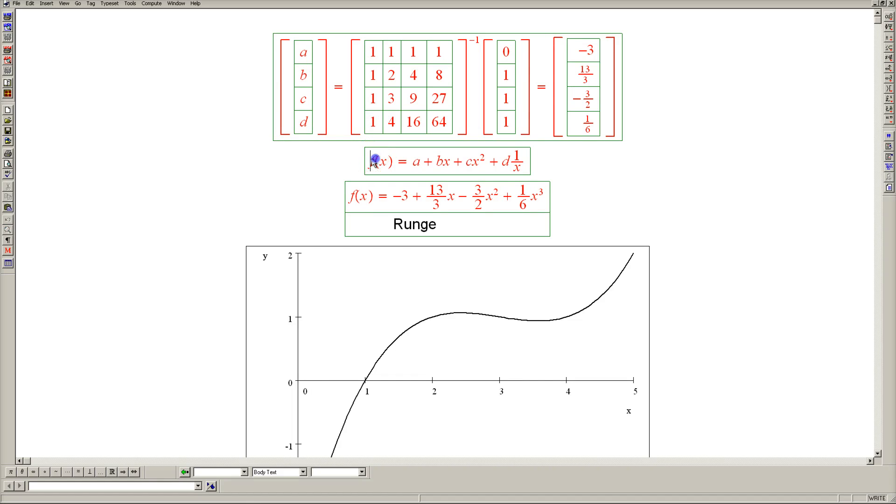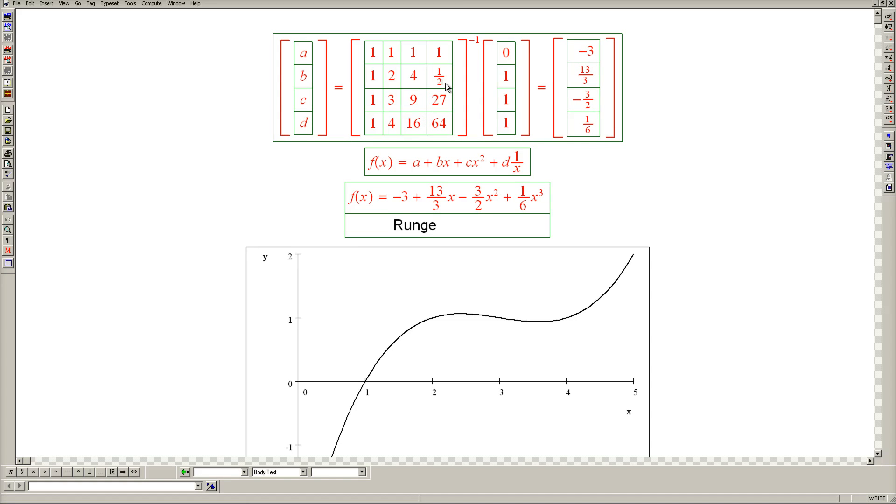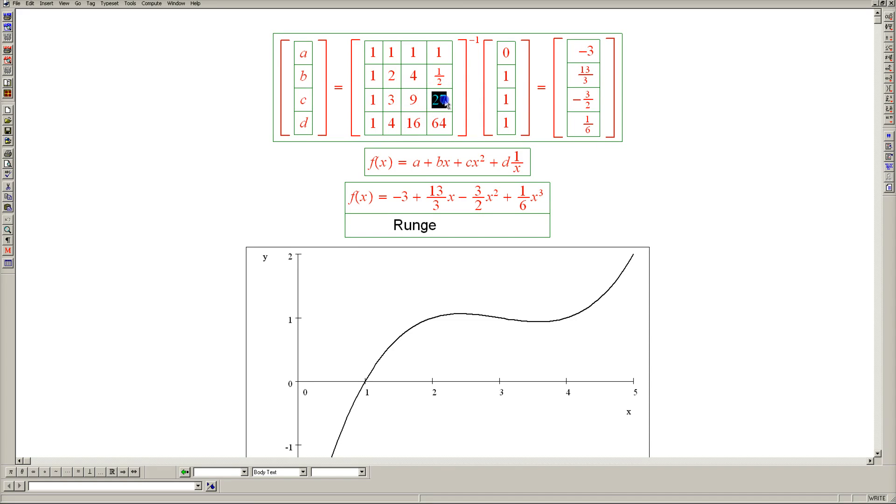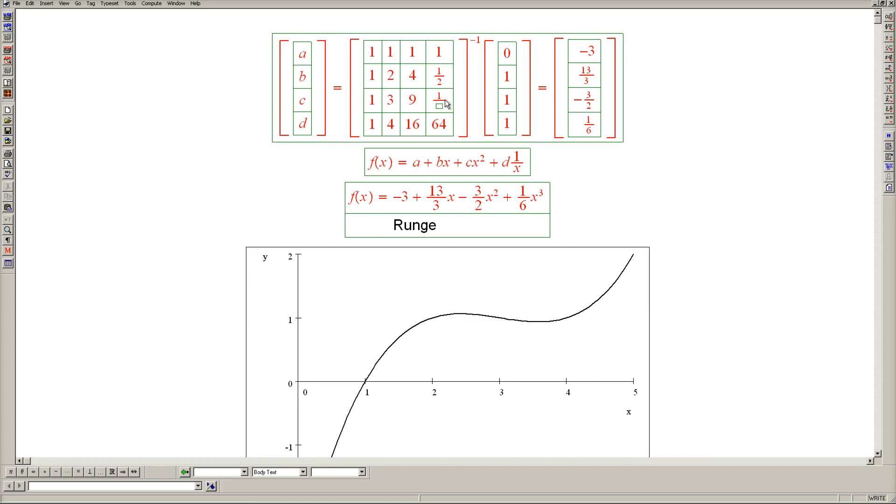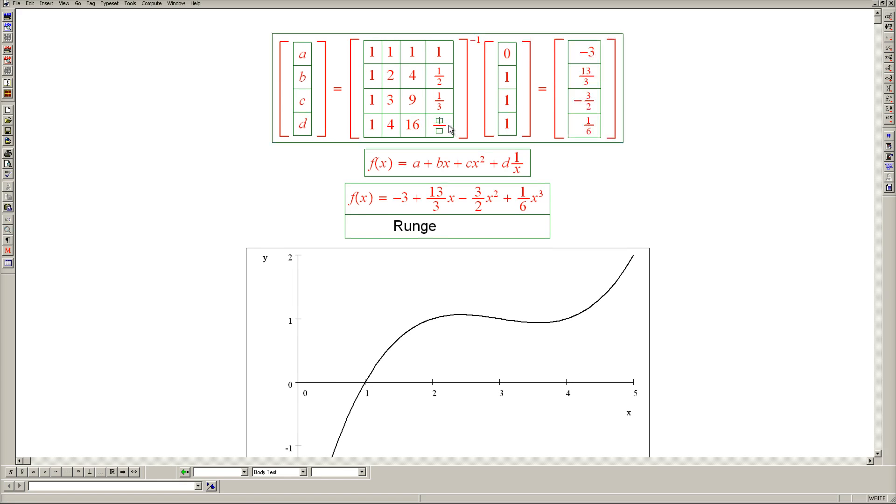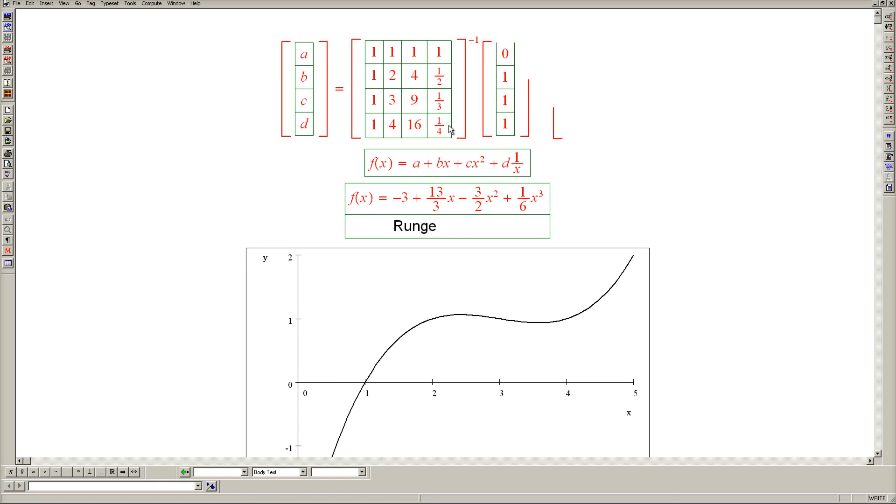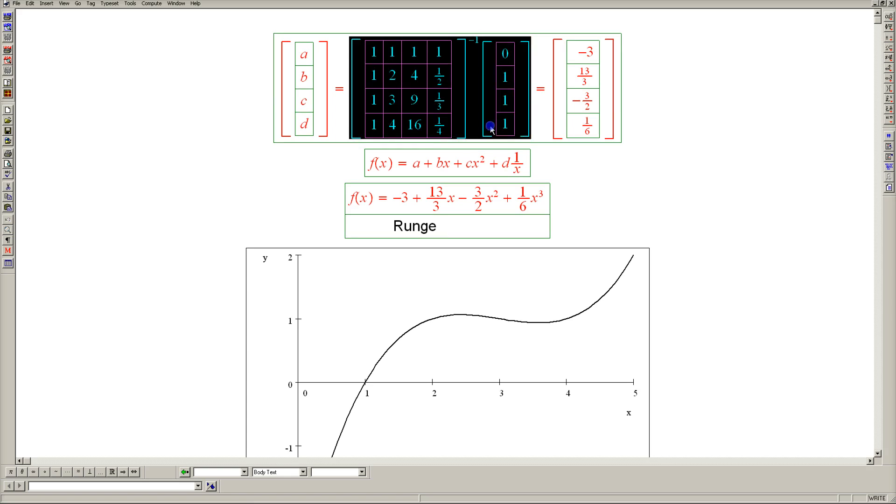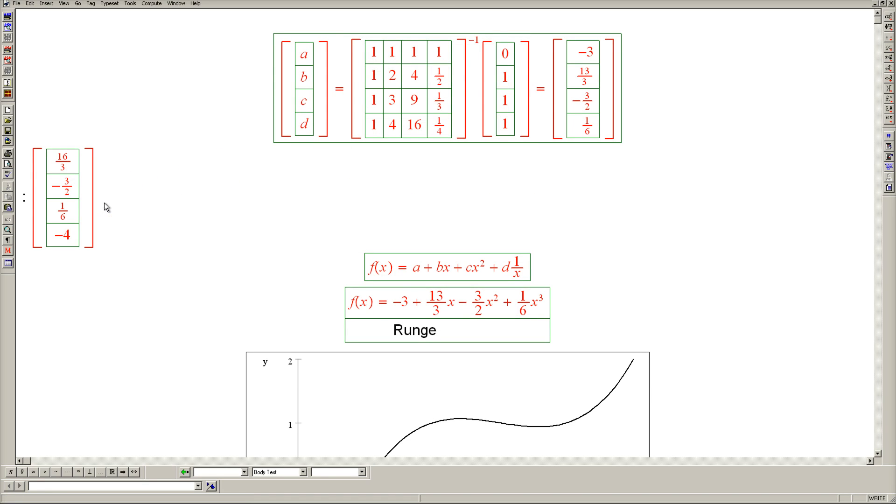All we need to do to find the coefficients of this new interpolant is to replace these three numbers in the matrix, as we just discussed. The 8 gets replaced with 1 half, the 27 gets replaced with 1 third, and 64 gets replaced with 1 quarter. And that's it. Our new coefficients are right here.